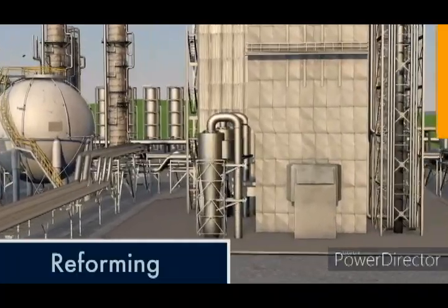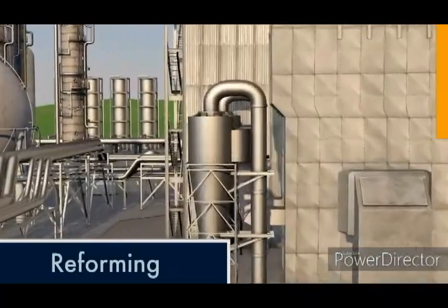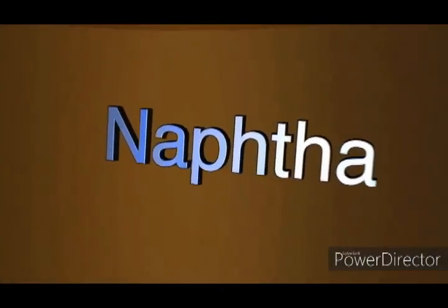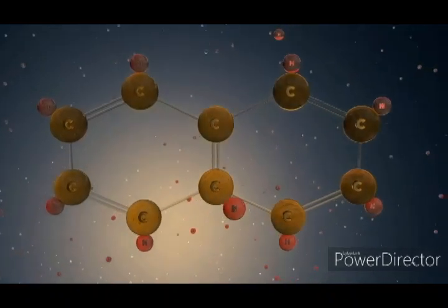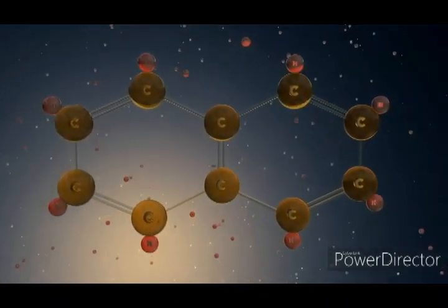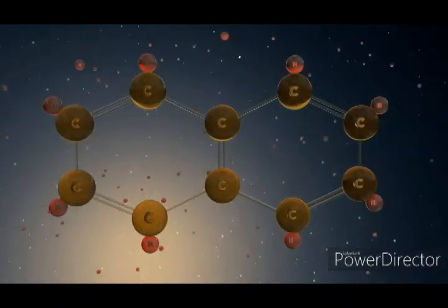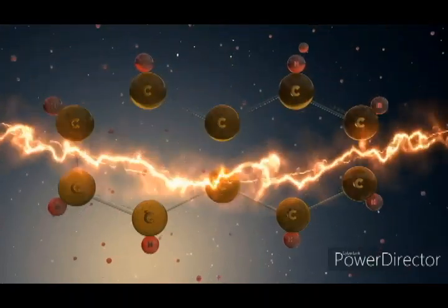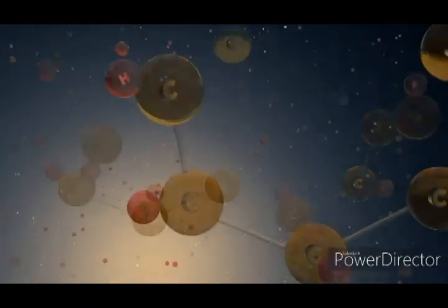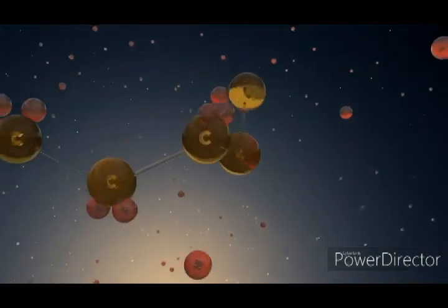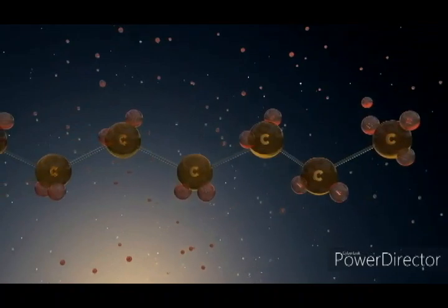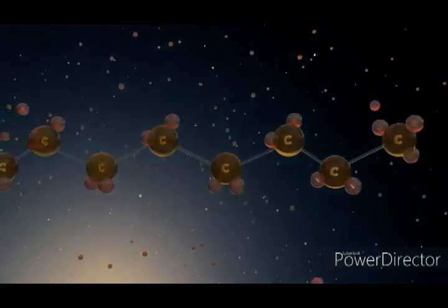Reforming is a process that increases the amount of gasoline produced from crude oil. One of the products is called naphtha. The number of carbon atoms in naphtha is about the same as in gasoline, but their structure is more complex. Reforming rearranges the naphtha molecules, turning them into usable gasoline-like molecules.